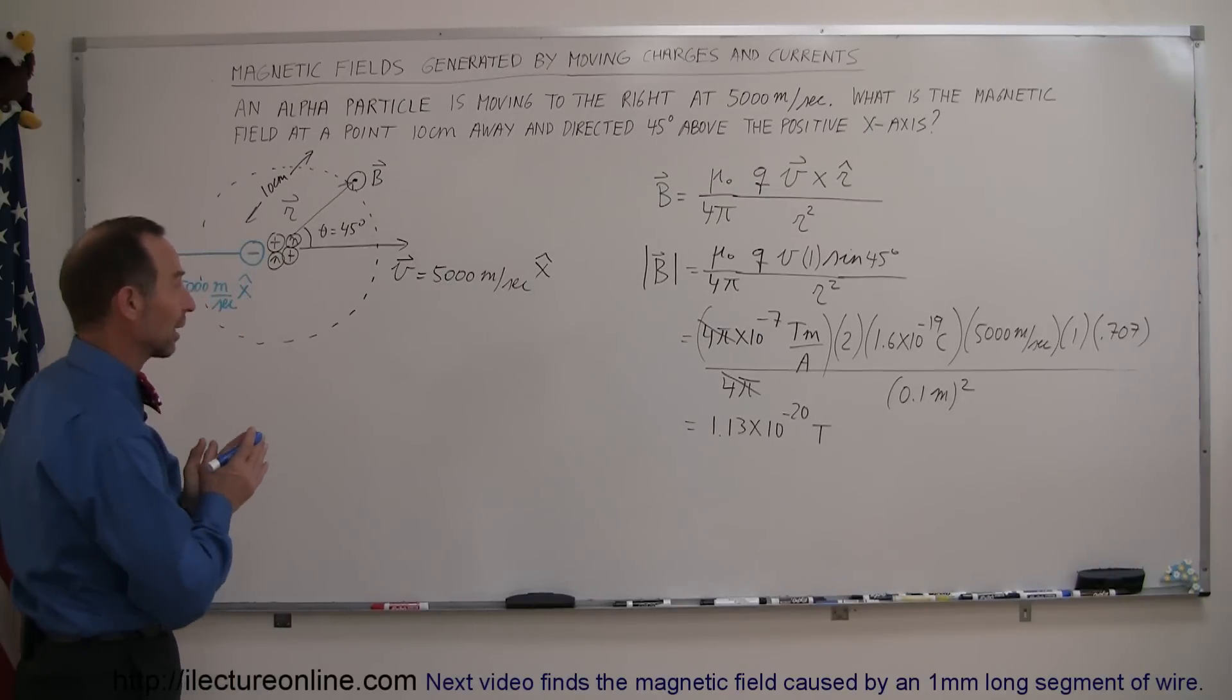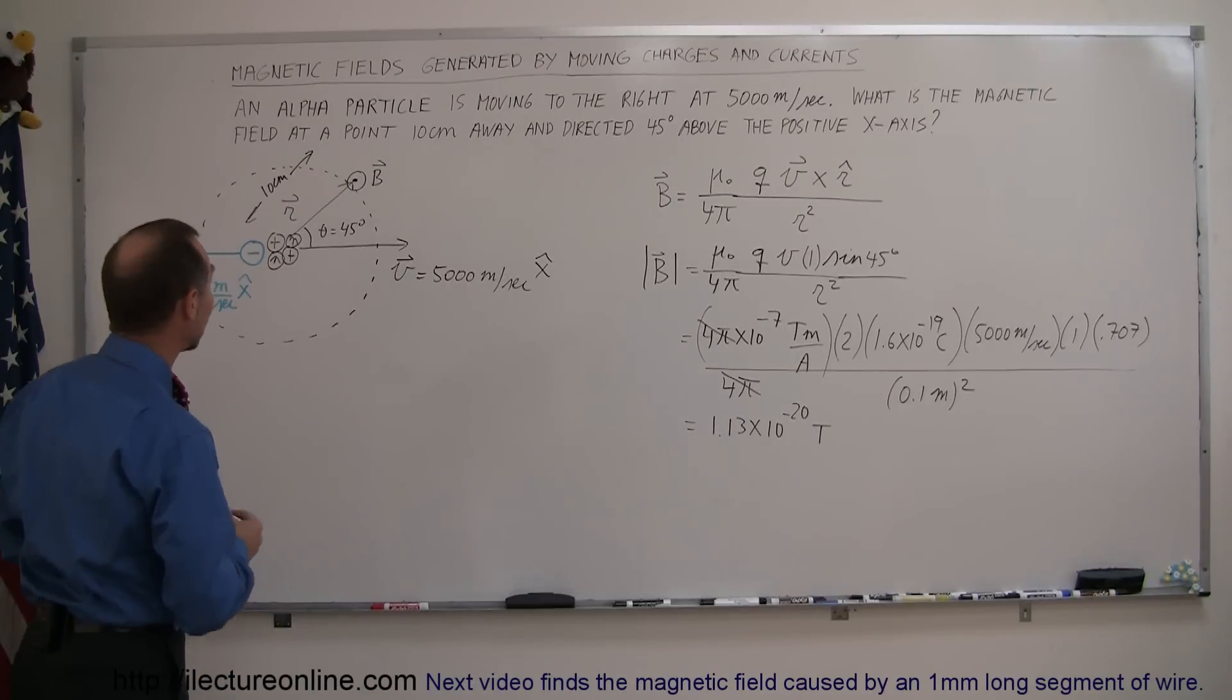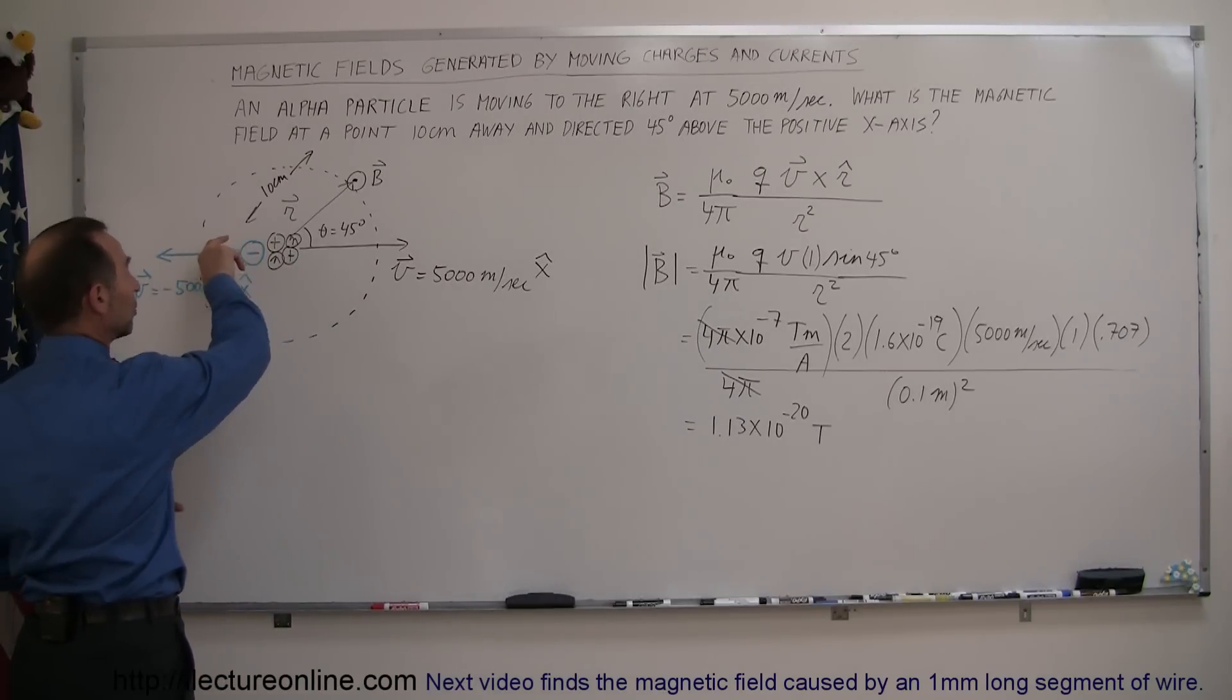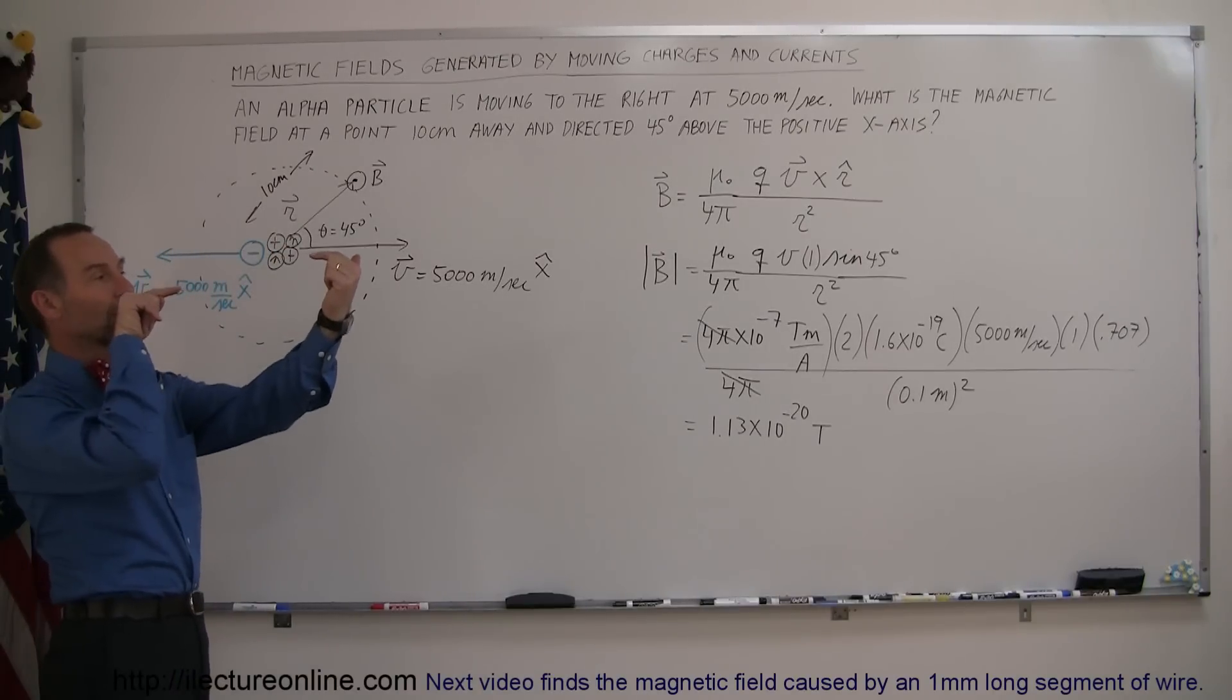Now if you look at this you recognize this was the end where we ended up with our previous example but what I'm adding to it now is at the same time that we have an alpha particle moving to the right we have an electron moving to the left and assume that at this very moment the two particles pass one another.